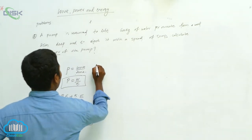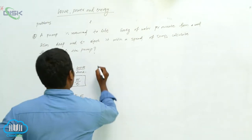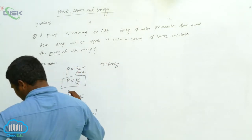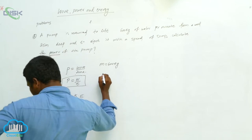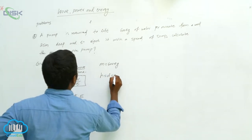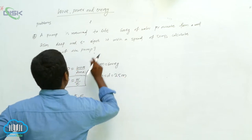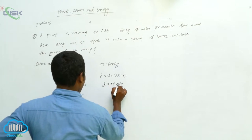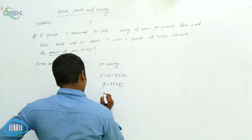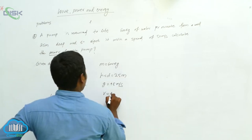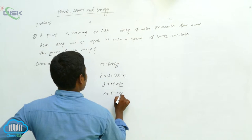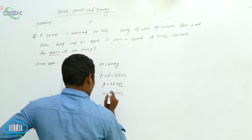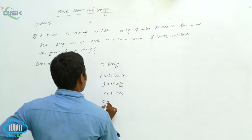Given values: m is equal to 600 kg, h is equal to 25 meters, g is equal to 9.8 meters per second squared, v is equal to 50 meters per second, and t is equal to 1 minute.